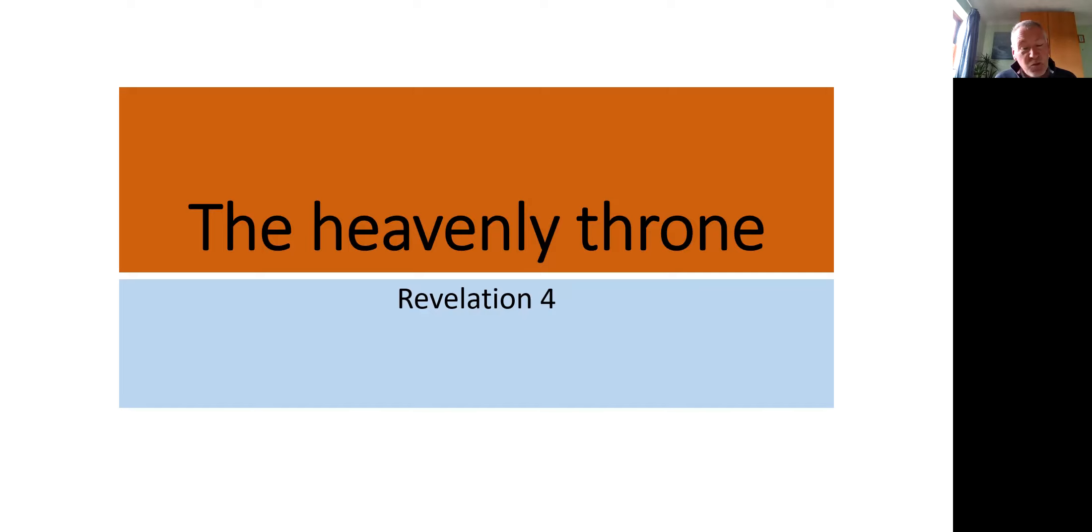And to make things more complicated for us, we know that some at least of what he describes is meant to be taken symbolically. We've seen that already in chapter one with the lampstands and the stars and other features of the vision of Christ. And we know for sure in the next chapter that the lamb that we see there is not a literal lamb but has to be a symbol of Christ.